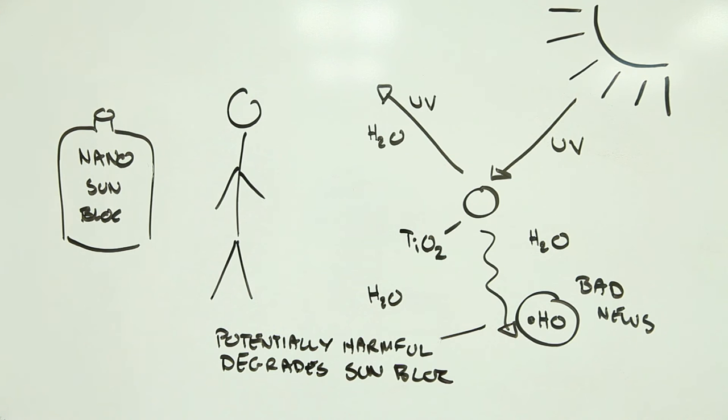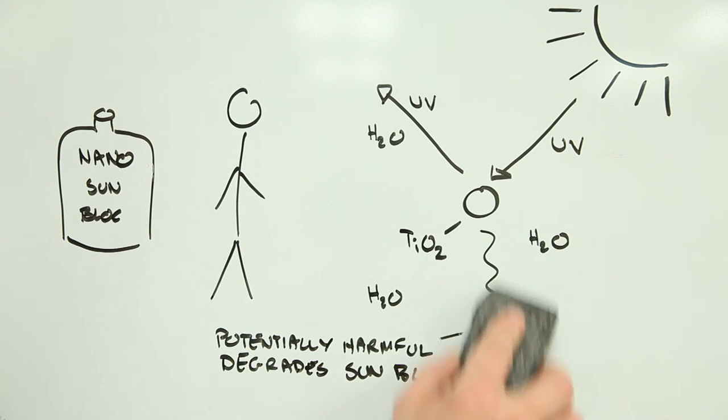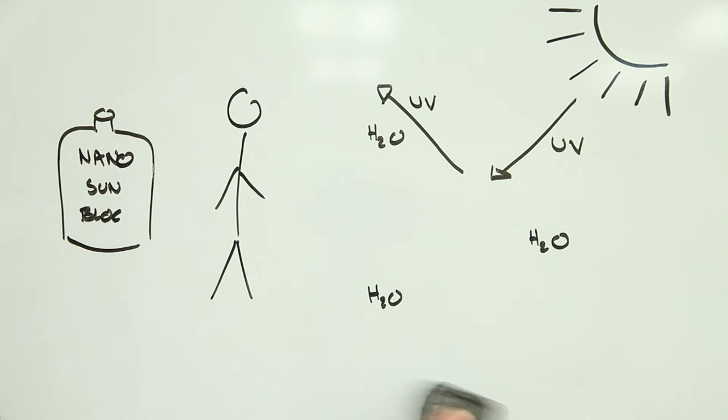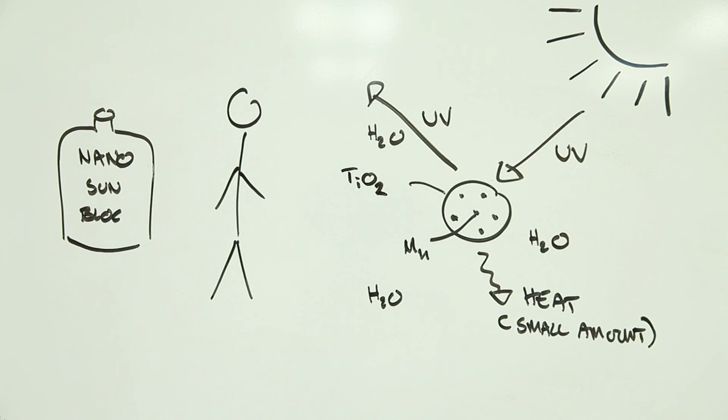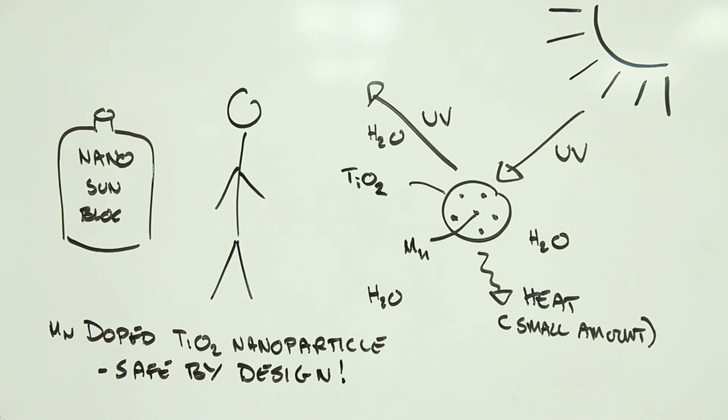To overcome this problem, one company engineered their sunscreen nanoparticles to be safe by design by adding small amounts of the metal manganese. The result was highly effective UV protection without the production of harmful free radicals, something that was only possible because of a combination of materials design know-how and health risk smarts.